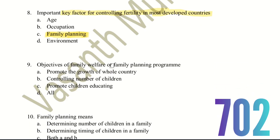Ninth question: what are the objectives of family welfare or family planning program? The choices are: promote the growth of the whole country, controlling number of children, or promoting children's education. All of these are objectives of the family planning program. For example, if a family has four children versus two, the ability to educate each child improves. Hence the right answer is all.